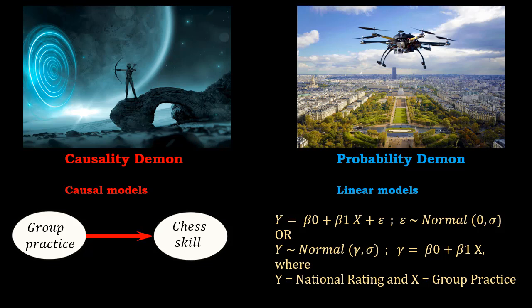we are going to use some measures of practice and measures of chess skill. For group practice, the measure we use is we ask people to determine the number of hours they spend in group practice since they started to play chess, and we generated the accumulation of those hours. And as chess skill, we use the national rating, which is an objective measure of their skill.